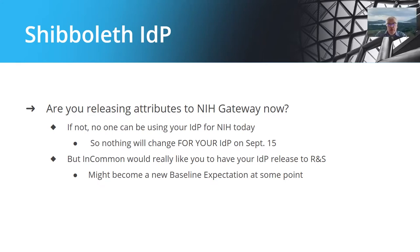I am an architect with Unicon. The first question you really need to ask is: are you releasing attributes today to the NIH gateway? If you're not, then you're not going to be impacted — nothing's going to change for you on September 15th. Your IDP cannot be used today by any of your researchers or anyone at your institution for NIH, unless you're releasing that core set of attributes: an identifier, name, an email, and maybe a person's scoped affiliation to the NIH gateway. So how would you know, in case you're not aware? You can check your activity logs to see if you're sending anything to NIH.